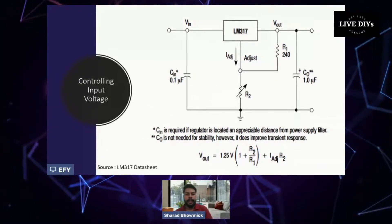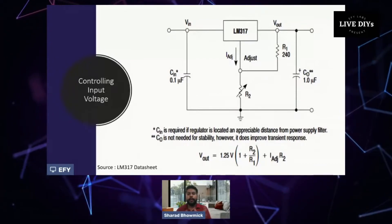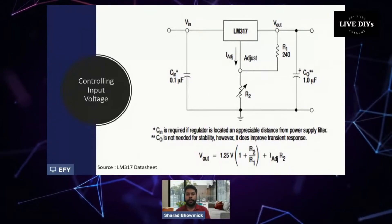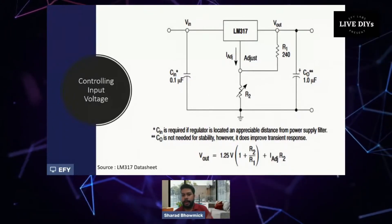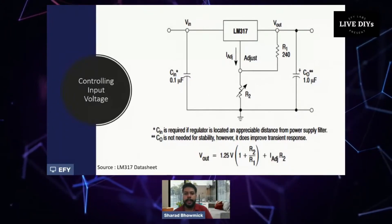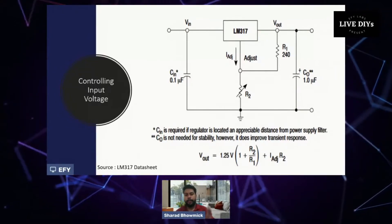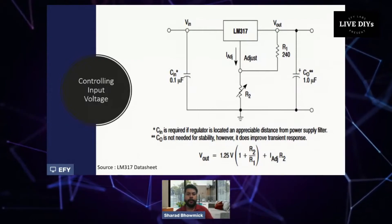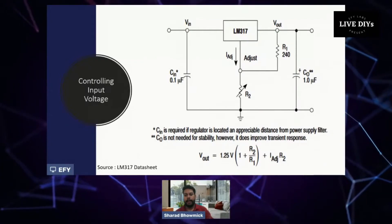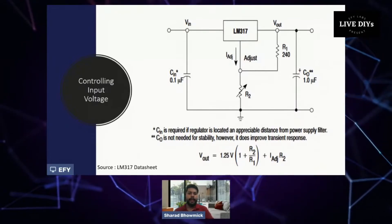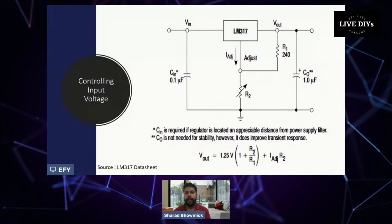The CN and Cout are for improving the output and reducing the transient response. It's better to have CN and Cout both, but Cout is not mandatory. The main important consideration we should keep while designing this is that we should keep the CN really close to LM317's input voltage.